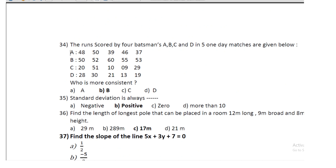Question 32: the runs scored by four batsmen A, B, C, and D in five one-day matches are given; who is more consistent? B is more consistent. Note: standard deviation is always positive. Question 33: find the length of the longest rod that can be placed in a room 12 m long, 9 m broad, and 8 m high; the length is 17 m.